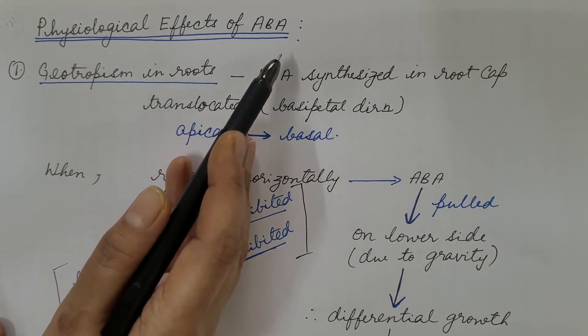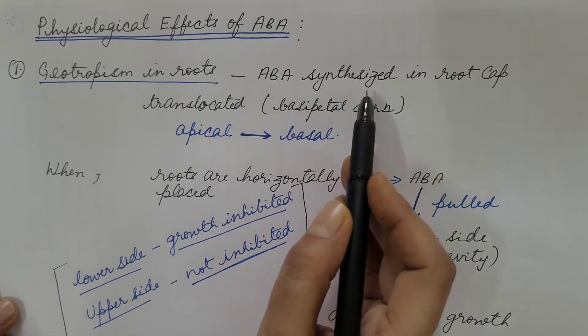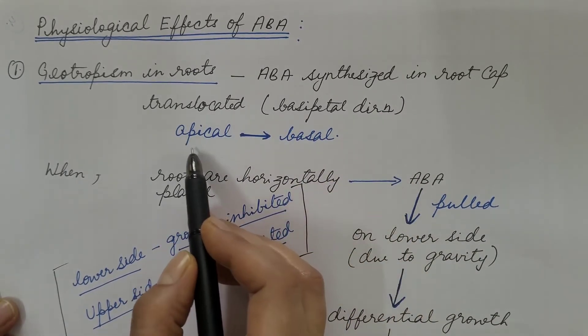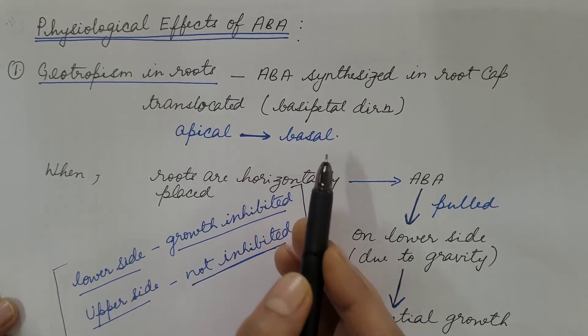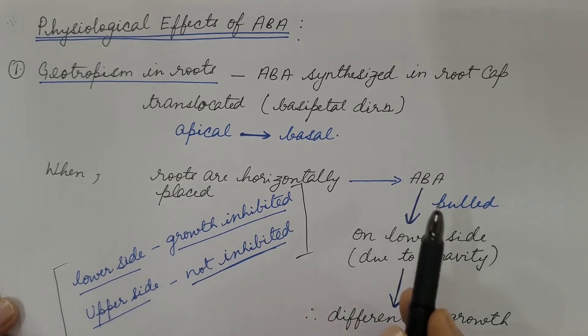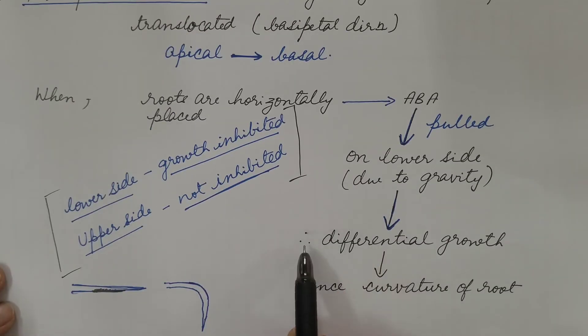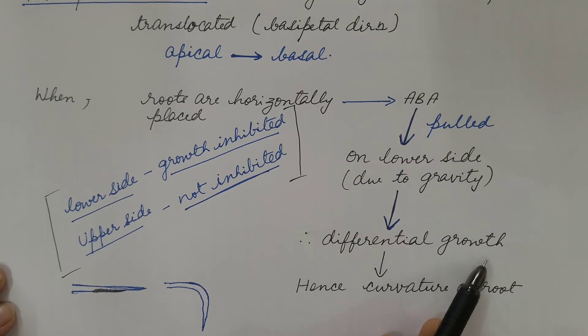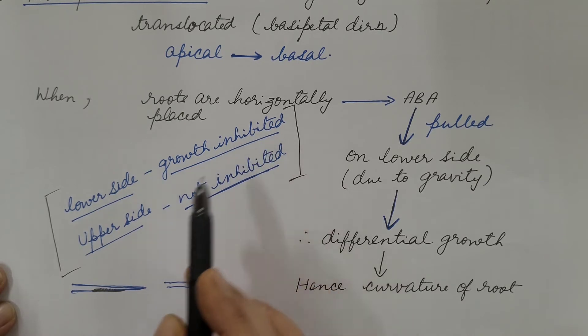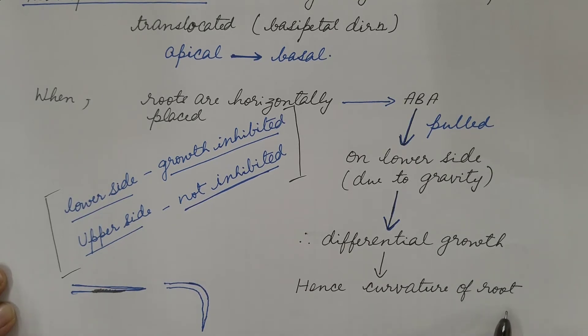Now let us see physiological effects of abscisic acid. First is geotropism in roots. Abscisic acid synthesized in root cap is translocated in basipetal direction, that is from apical region to basal region. When roots are horizontally placed, abscisic acid is pulled on the lower side due to gravity. Therefore, it results in differential growth of root. The lower side, due to the presence of abscisic acid, growth is inhibited.